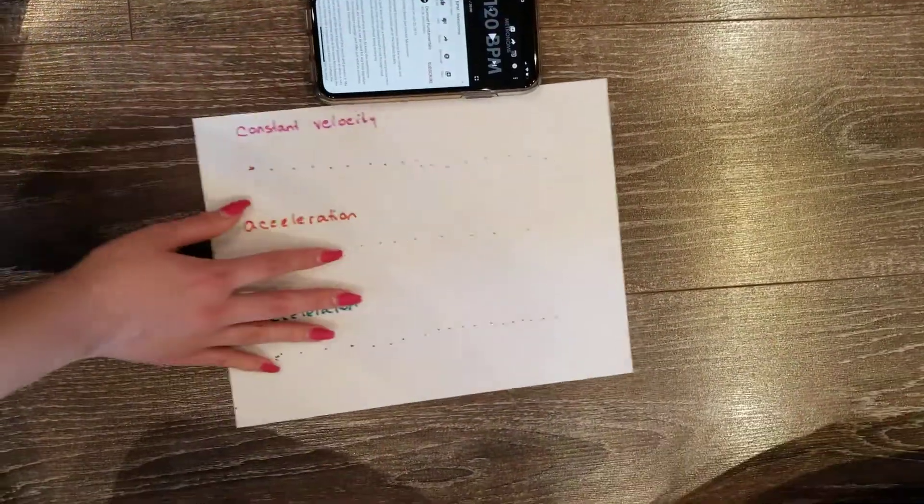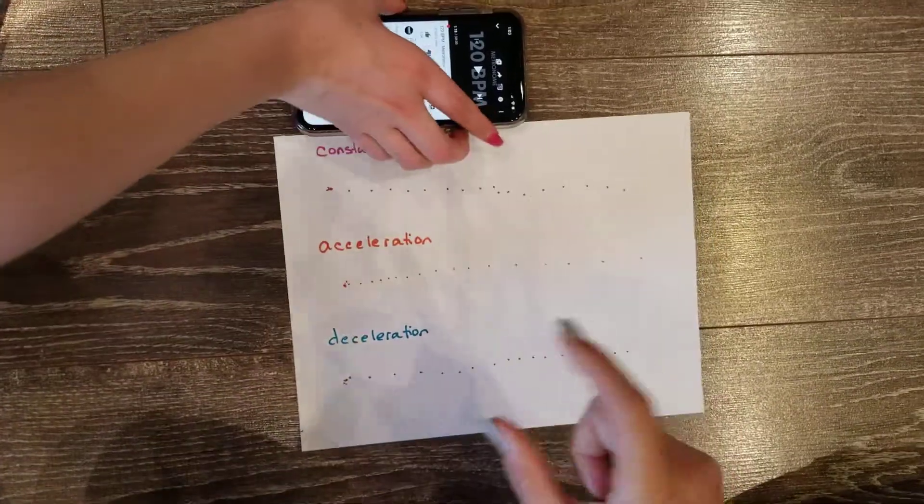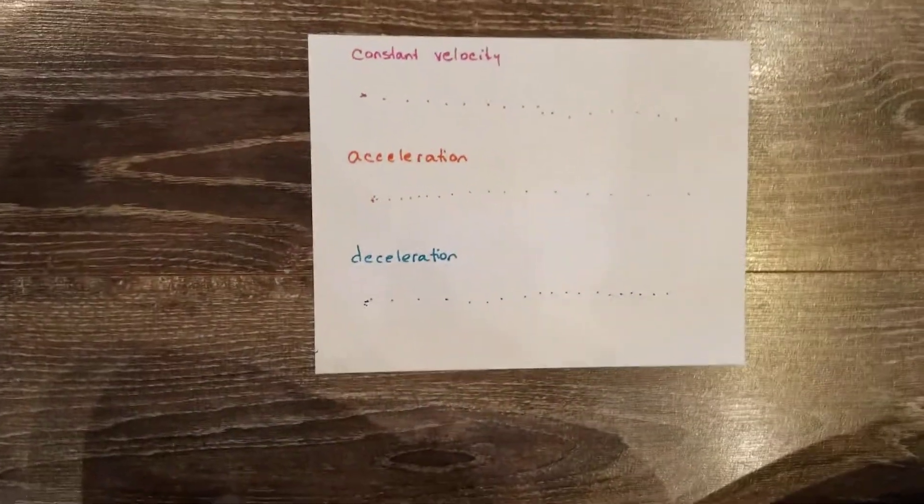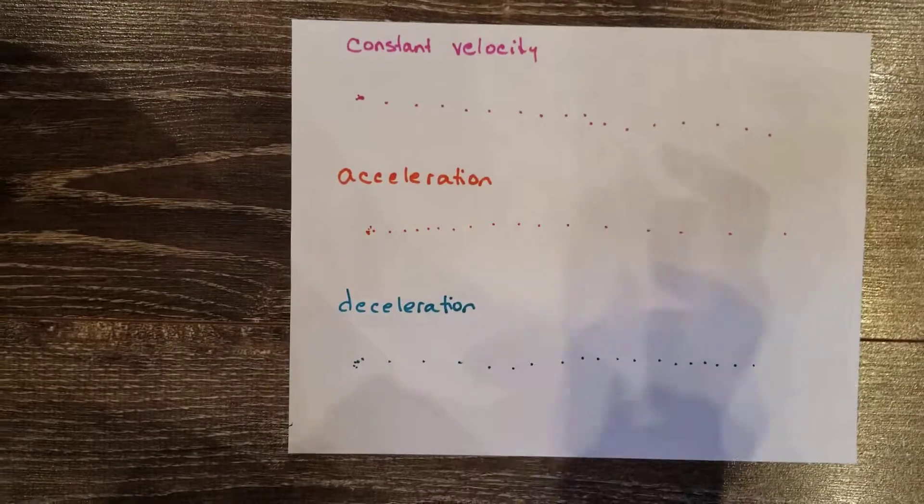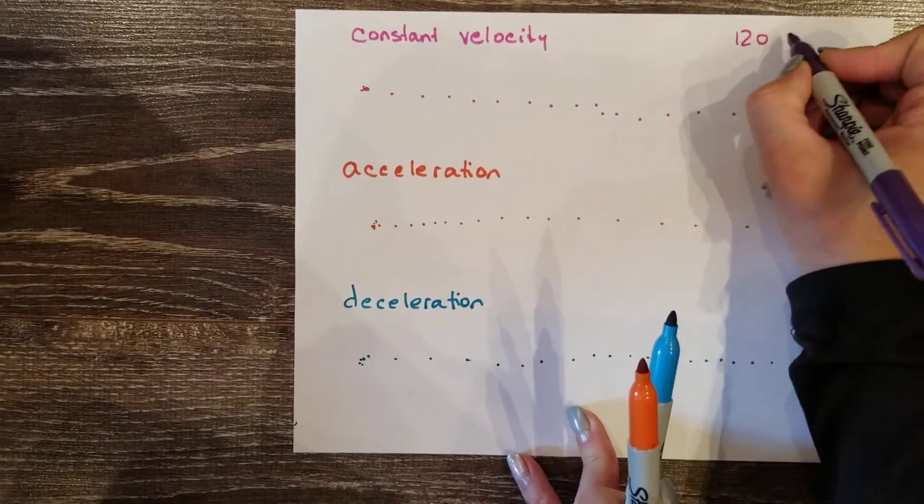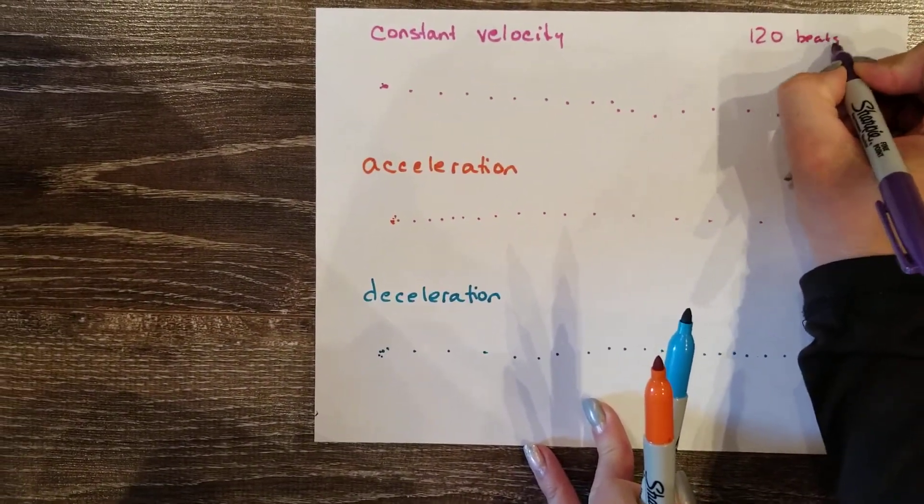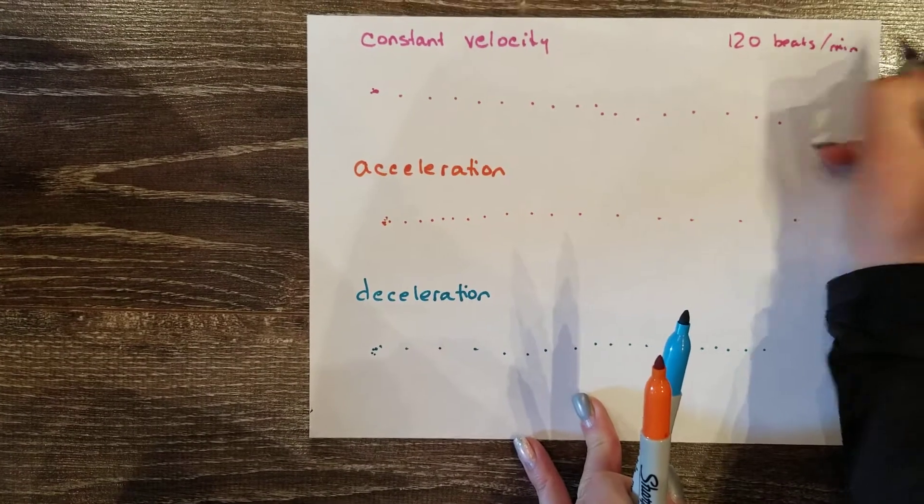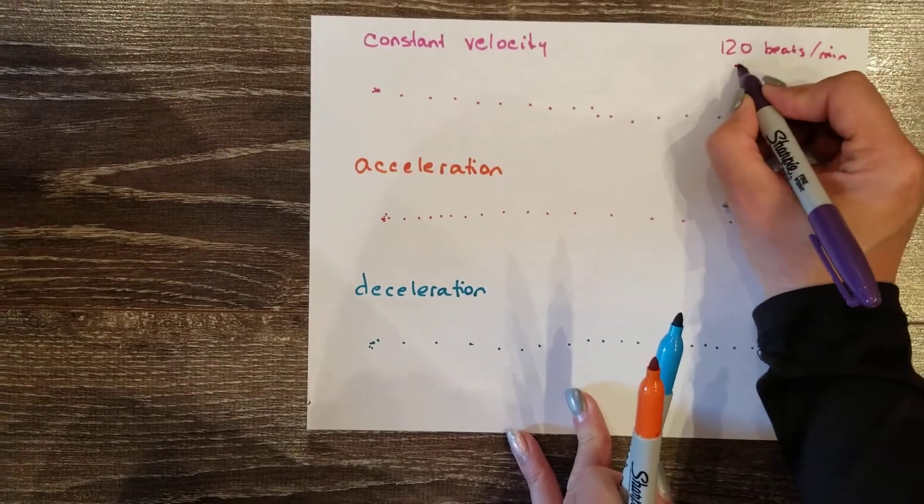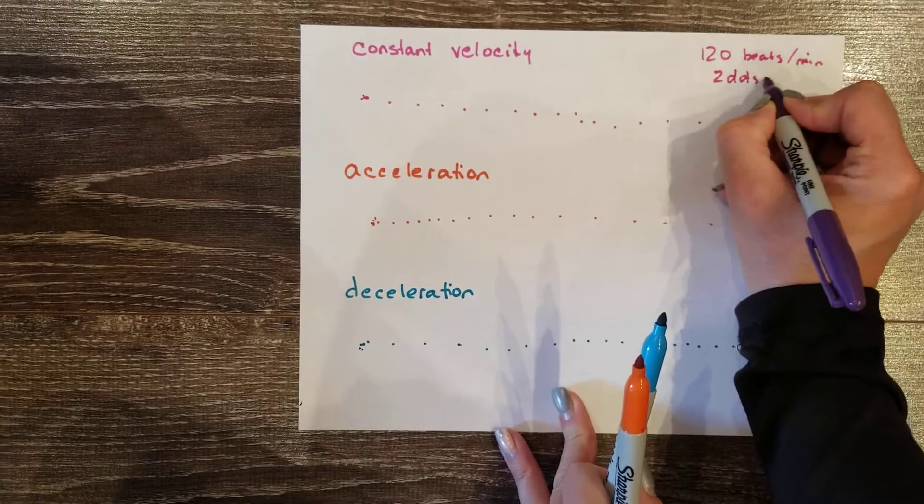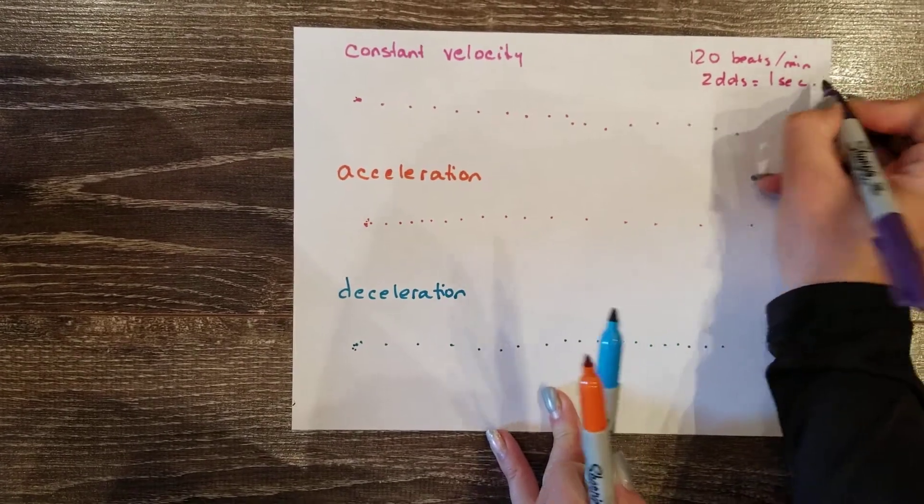Okay, so we have three ticker tapes. Now in the lab we would have had a little machine do this for us. Because we picked a timer that was working at 120 beats every minute, we can assume that every two dots is equal to one second of time passing.